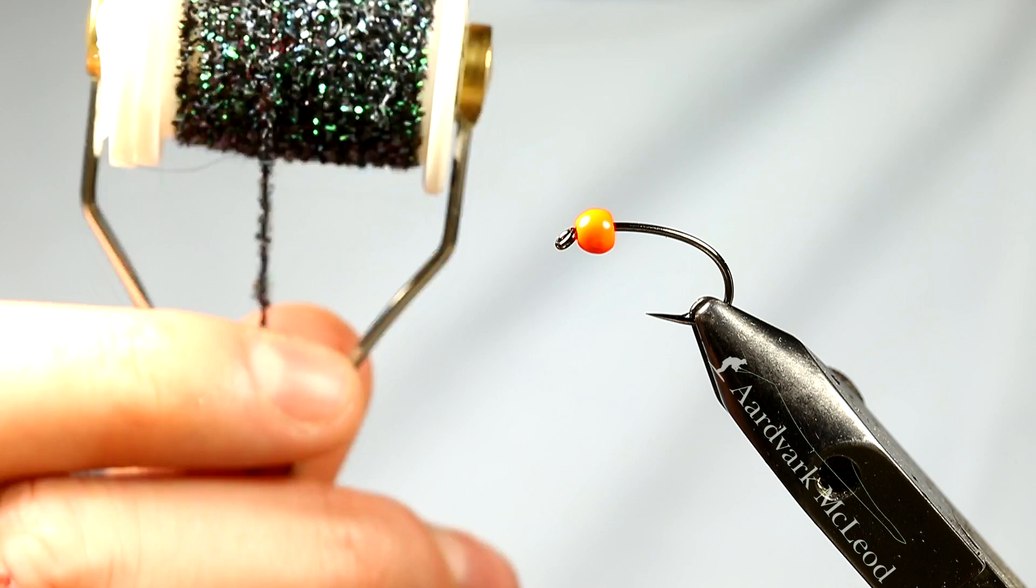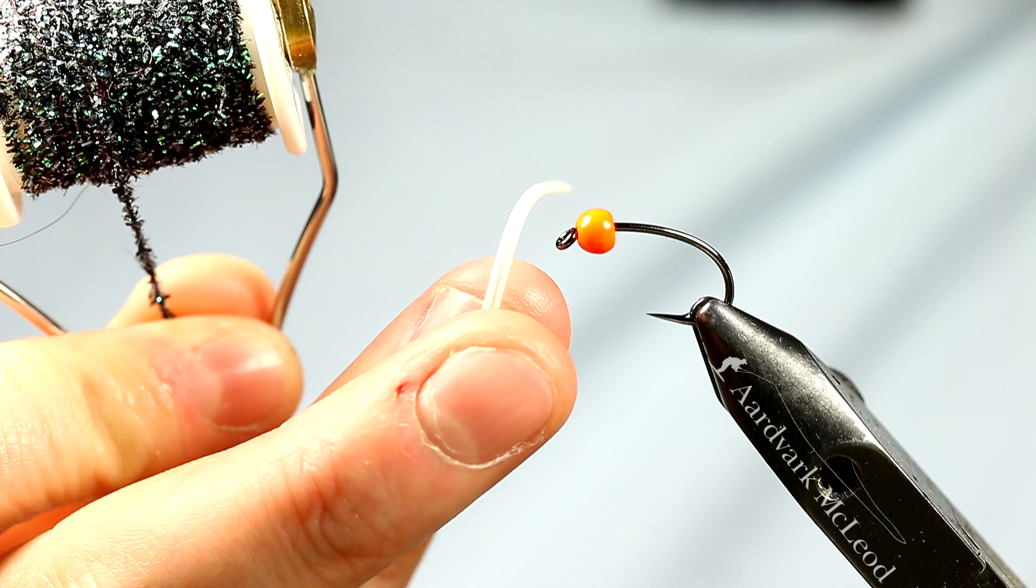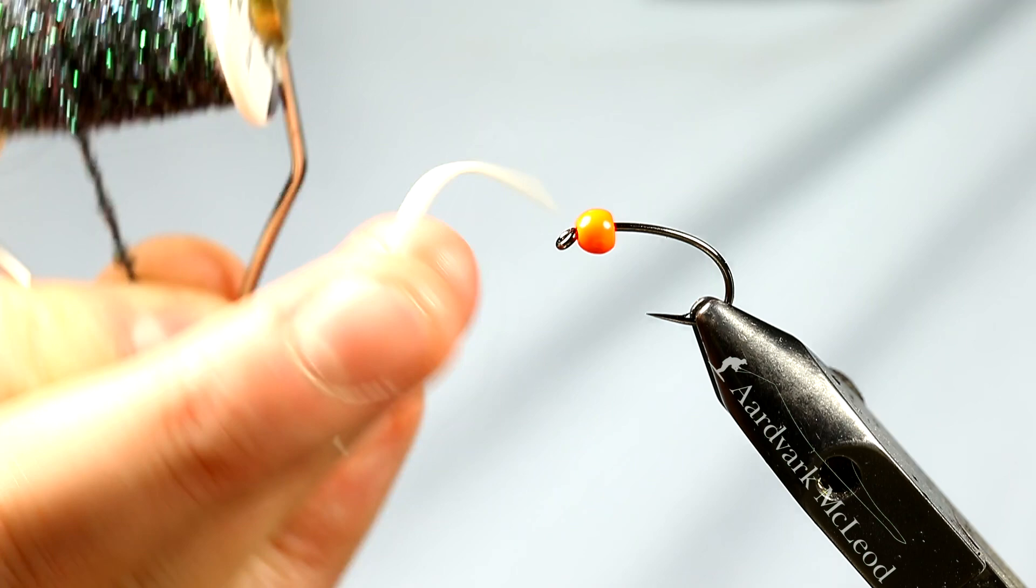And the second body would be the rubber legs and they are Wapsi round rubber legs in medium and white, obviously. But that's all, those are the two ingredients for this fly.